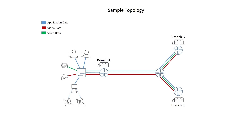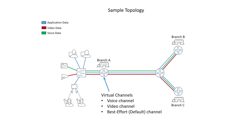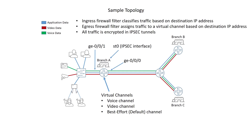Our sample topology consists of five devices. Four are routing devices: branch A, branch B, branch C, and a provider router that isn't labeled in the diagram. The fifth device is a client device in branch A that will send traffic to both branch B and branch C. This is done by using a simple FTP process and a multi-field classifier on the branch A router that assigns each FTP feed to a different traffic class — branch B voice, branch B video, branch C voice, and branch C video. The branch A router will use virtual channels on the single Ethernet link towards the provider router.